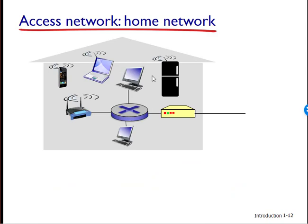On corporate and university campuses and increasingly on home settings, a local area network, LAN, is used to connect an end system to the edge router. Although there are many types of LAN technologies, Ethernet is by far the most prevalent access technology in corporate, university, and home networks. Ethernet users use twisted pair copper wire to connect to an Ethernet switch.